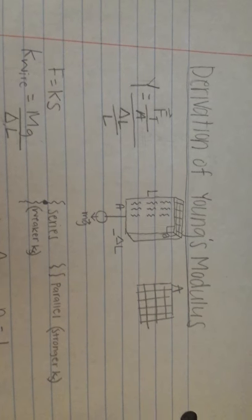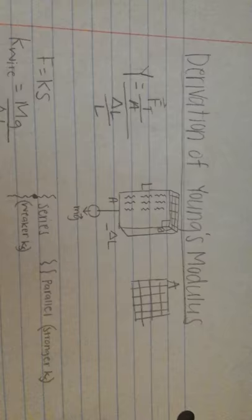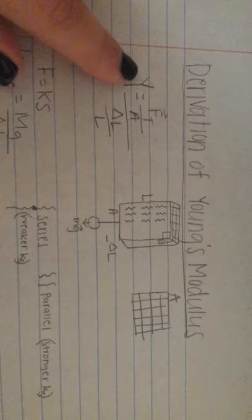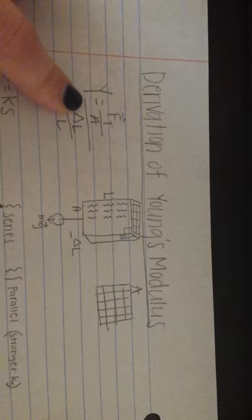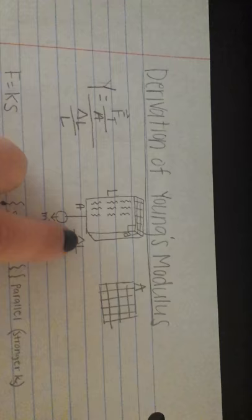Okay, this is my derivation of Young's modulus. I have the original Young's modulus here. Y equals the tension force over the area, all over the change in length, which is the change in length here, which is how far the spring moves, over L, which is the original length, which is here, the original length of the wire itself.